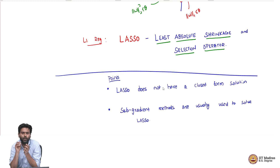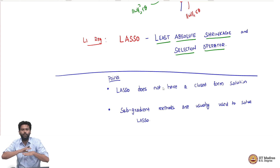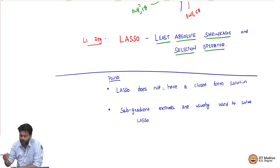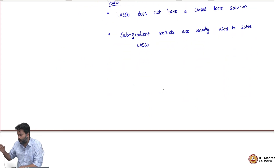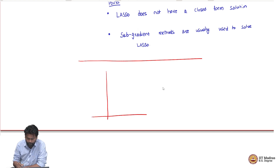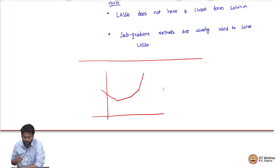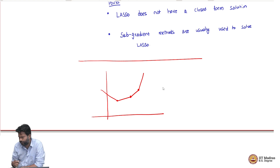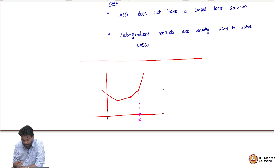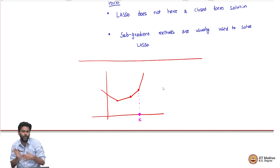A sub-gradient is equivalent to a gradient if a gradient is present at a point. If not, it is a direction where the function is completely lower bounded in that direction. Let me give some examples of sub-gradients. Say you have some piecewise linear function. You can see there are different pieces of this function at different points. At a particular input point x, two pieces are intersecting and the function is not differentiable at that point, so there is no gradient you can find there.